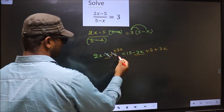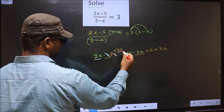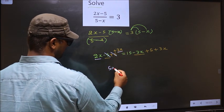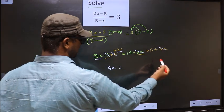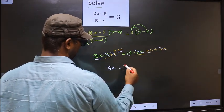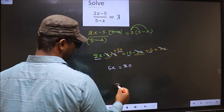Now minus 5 plus 5 cancel out. 2x plus 3x is 5x, equal to, minus 3x plus 3x cancel out, 15 plus 5 is 20. Now to get x, we should remove 5.